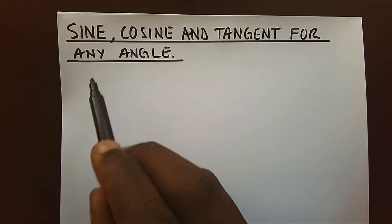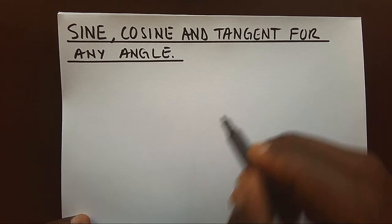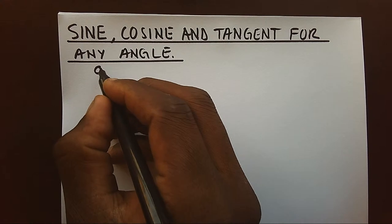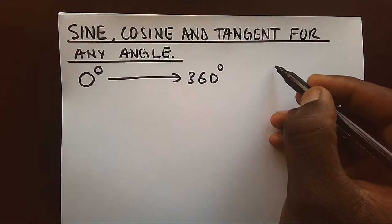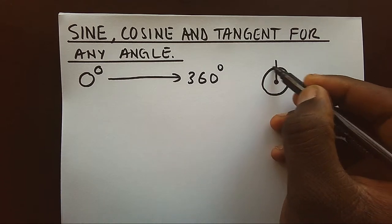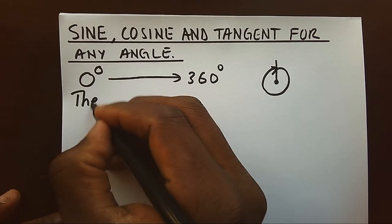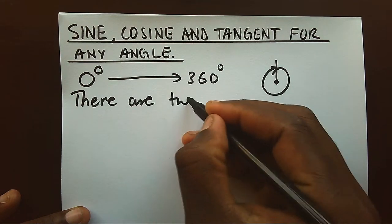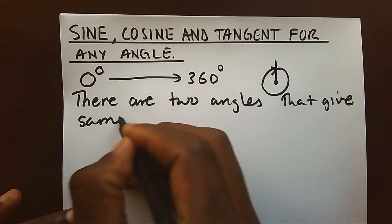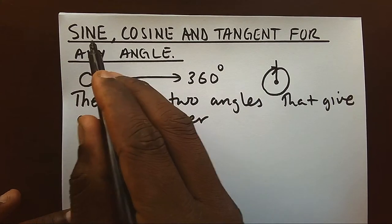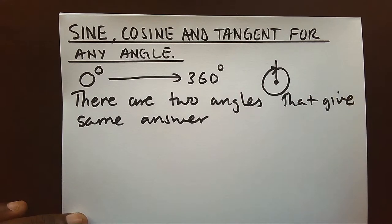We are looking at sine, cosine, and tangent for any angle. Angles start from 0 degrees to 360, which is a complete circle movement. We need to learn that there are two different angles that give the same answer for either sine, cosine, or tangent. Our aim is to understand how we can find these angles.